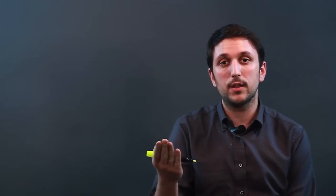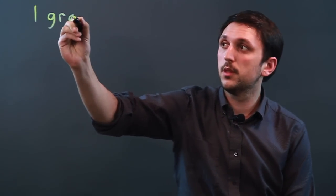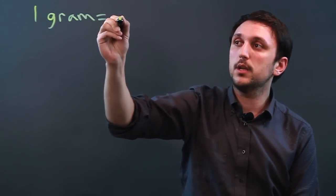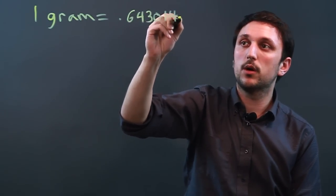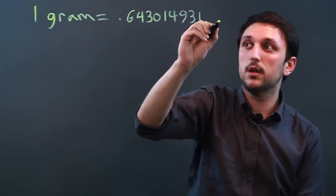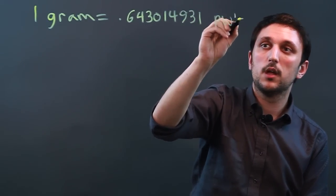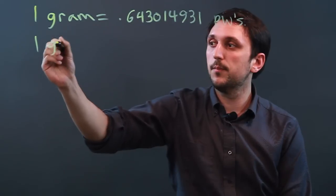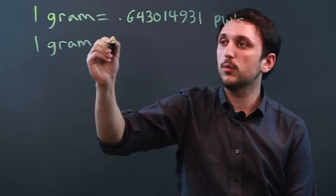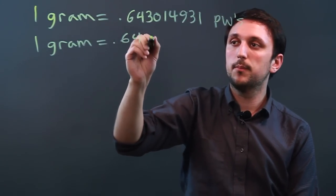Rather, the question, how many penny weights are in one gram? So one gram equals 0.643014931 penny weights. That's a long number. If you want to make the math more easy, you say 1 gram equals 0.64 penny weights.